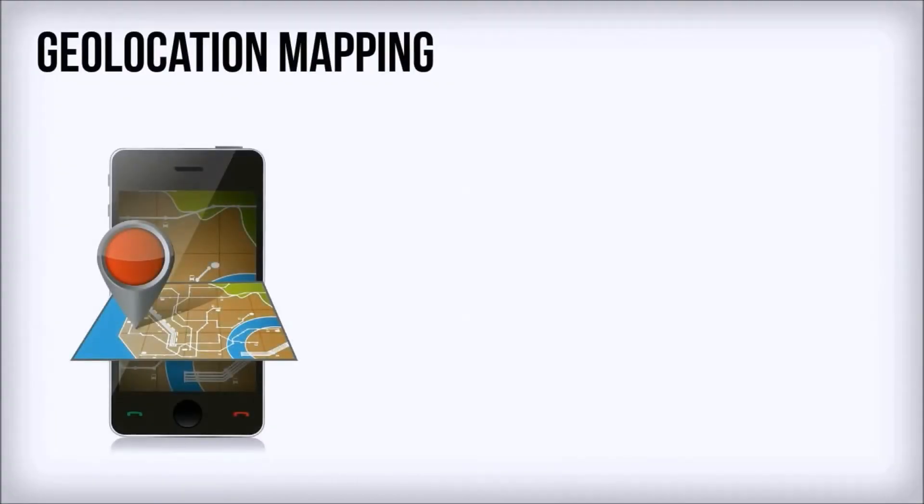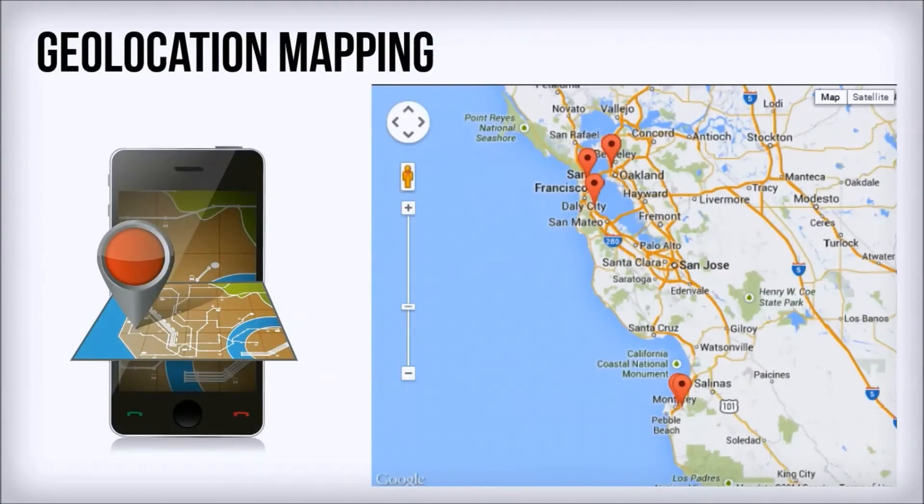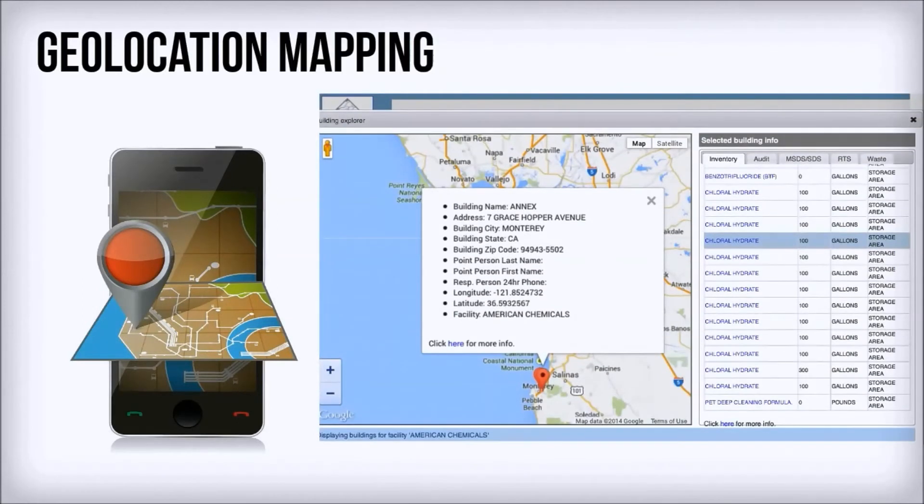With the EMS geolocation mapping feature, you can even locate and review chemical inventory and MSDS data on a map in real time.